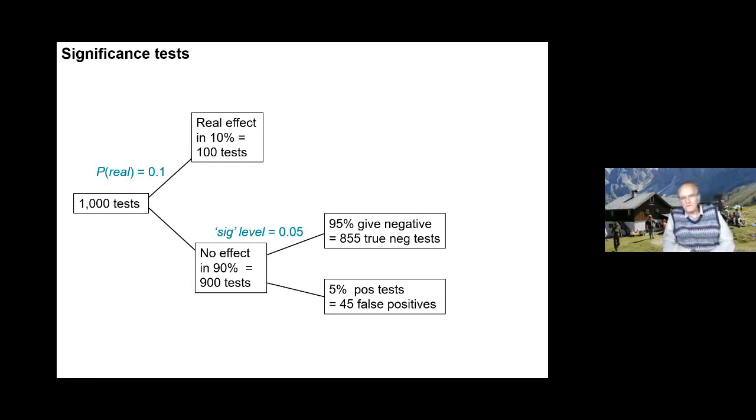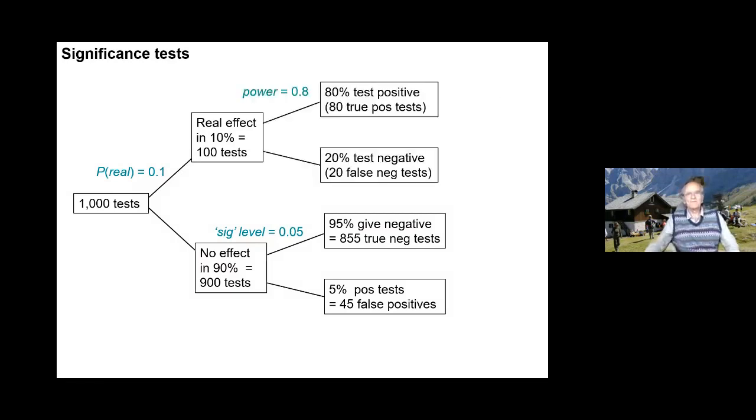That's as far as you can go with null hypothesis significance tests. You can't tell what's going on unless you consider the other arm. If the power is 80%, then we get 80 true positive tests and 20 false negative tests.